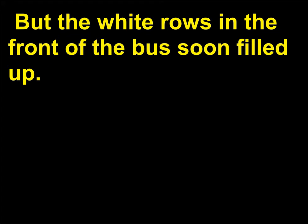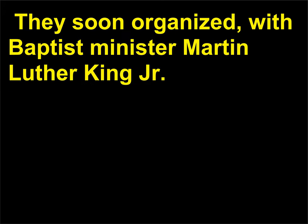but the white rows in the front of the bus soon filled up. When Parks was asked to give up her seat so that a white man could sit, she refused and was arrested and sent to jail. Montgomery's black leaders had already been discussing staging a protest against racial segregation on the city buses. They soon organized, with Baptist minister Martin Luther King, Jr., 1929–1968, as their leader.